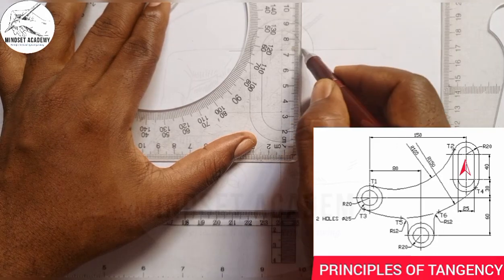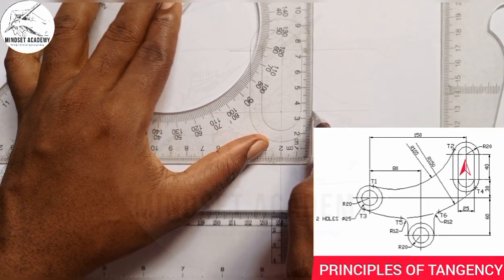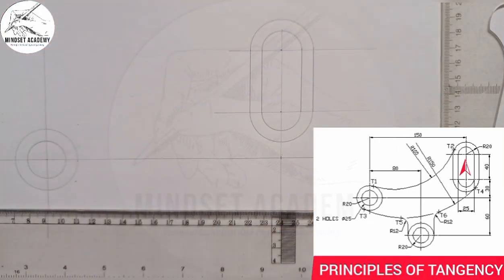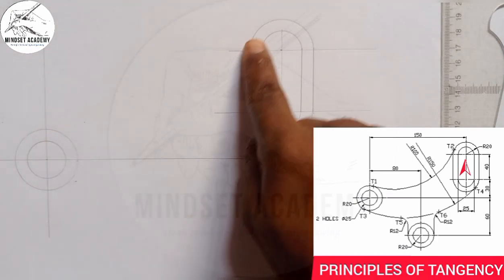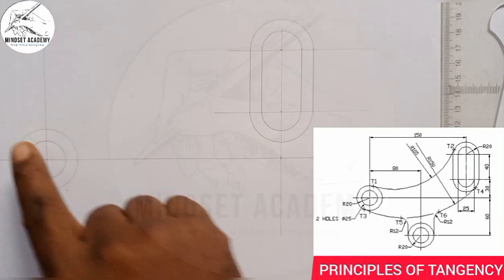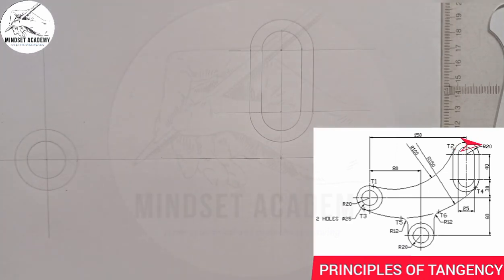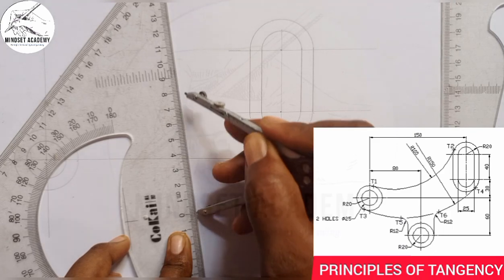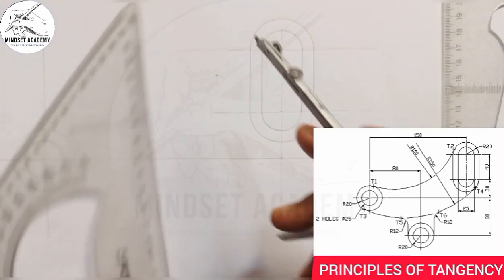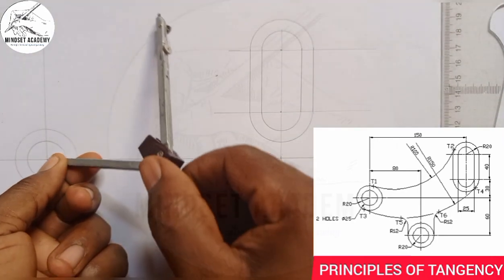Now I want to get an arc touching these two circles. The radius of the outer circle is 20, and the bigger arc connecting these two circles has a radius of 100. Since it is external, we add: 100 plus 20 gives us 120. I'll measure 120 on my ruler from 0 to 120, place it at this center point, and strike an arc.